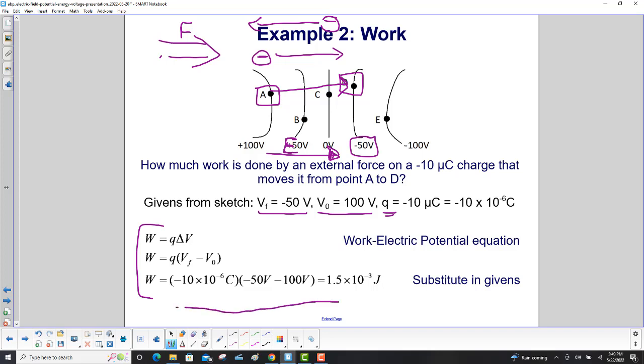We input everybody. We have the charge of negative 10 times 10 to the minus 6 coulombs. It's always V final minus V initial. So it would be negative 50 volts minus 100 volts. We carry out the math, and we get 1.5 times 10 to the minus 3 joules. The equation and our analysis using electric field give the same sign, which is very good.